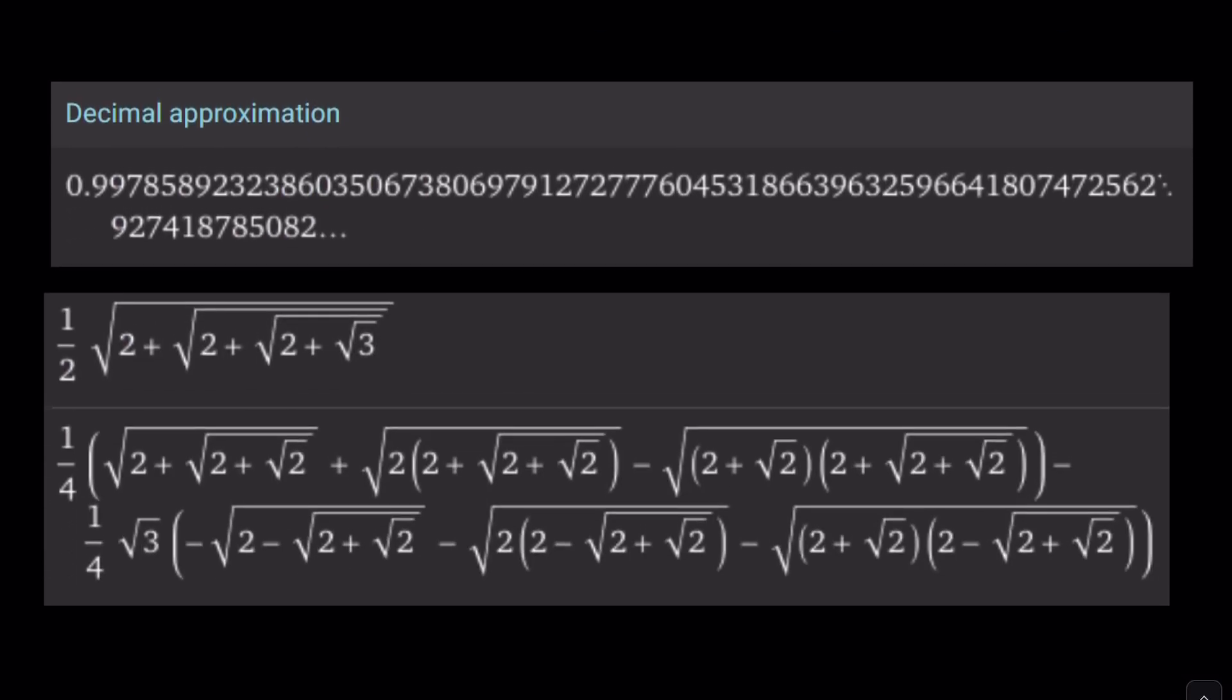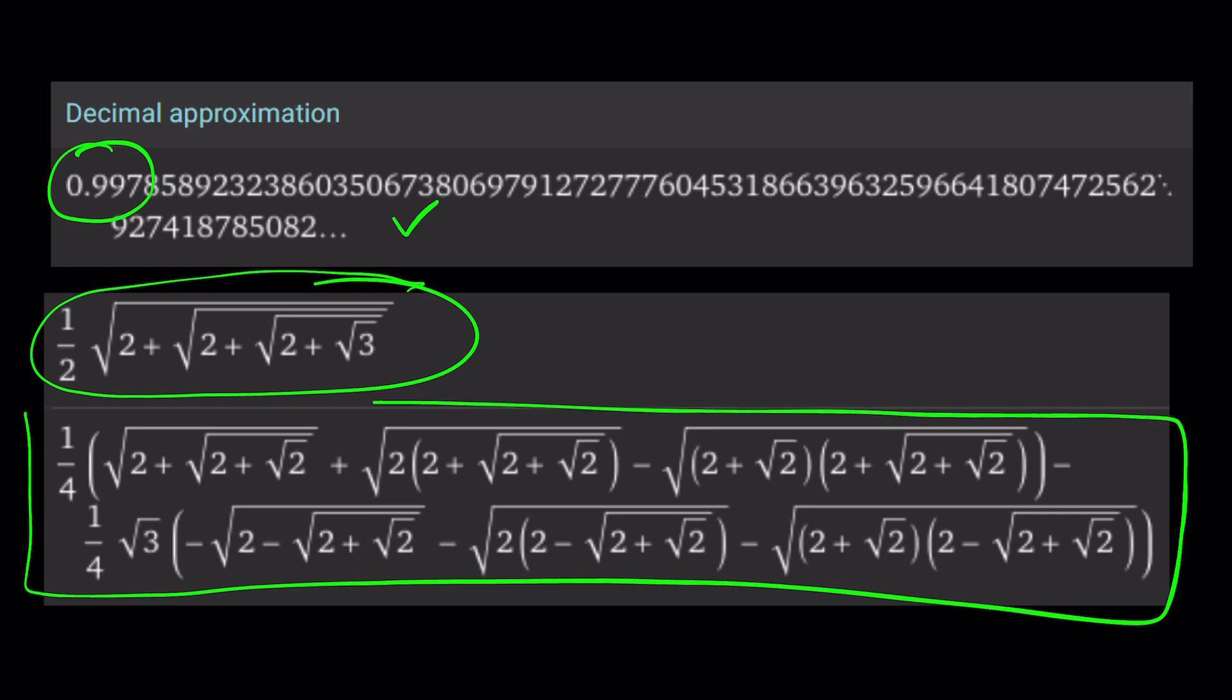Let's take a look. Wolfram Alpha gives us the following values, which is interesting. The decimal approximation—look at this number. Super close to 1, obviously. That makes a lot of sense, because it's a small angle. And this is what we were supposed to find. But why were we not able to find it? That's a good question. Maybe we should never simplify 2 plus root 3 and stick to that. But notice that we have a much more complicated way to express it.